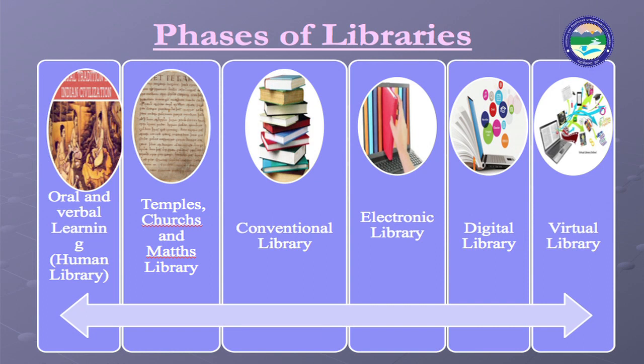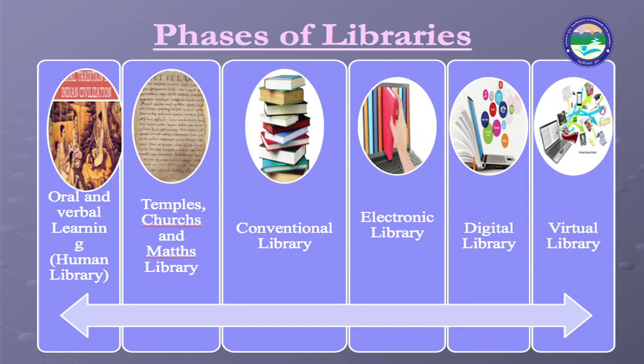Now let us move towards the phases of libraries, which are divided into six phases. The first is oral or verbal learning, also called human library. In ancient times, information was obtained from subject experts. Religious leaders preached through songs, literature, and instructions. The subject experts, religious leaders, and priests played the role of library. However, since man is mortal, if a subject expert or religious leader died, all their knowledge would be destroyed with them.